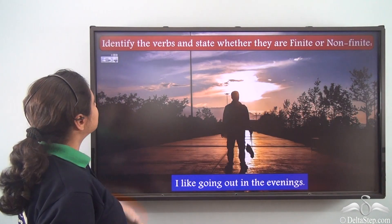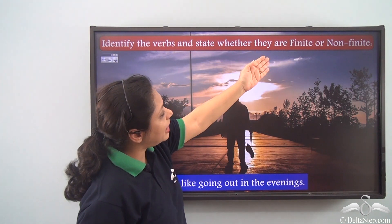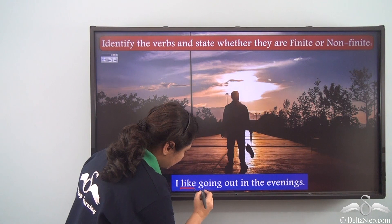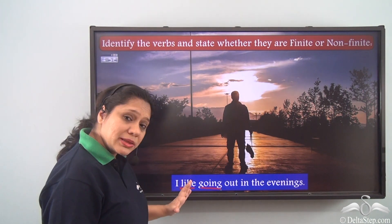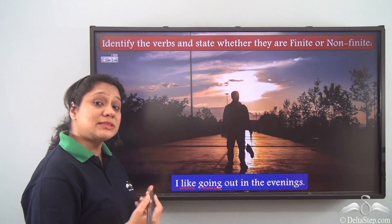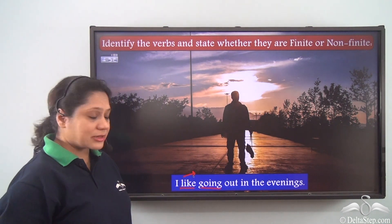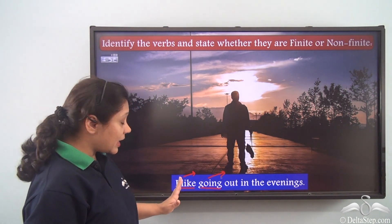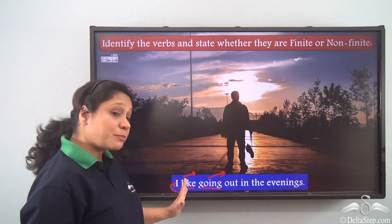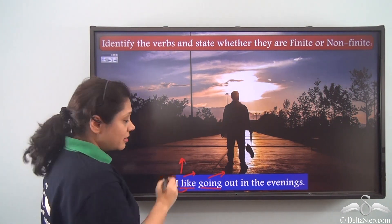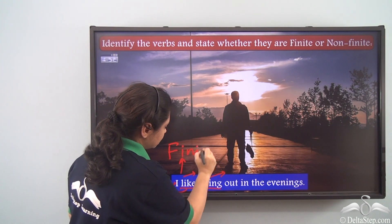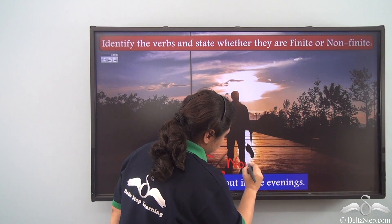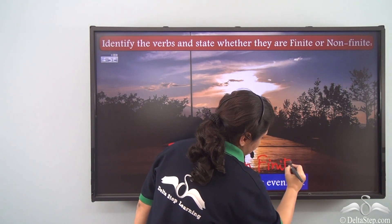Now let us do this exercise: Identify the verbs and state whether they are finite or non-finite. Sentence: I like going out in the evenings. What are the verbs? 'Like' and 'going.' Both verbs refer to two different actions — 'like' refers to one action and 'going' refers to another. 'Like' will change according to the subject and portrays a tense, hence 'like' is a finite verb. But 'going' does not portray any tense, hence 'going' is a non-finite verb.